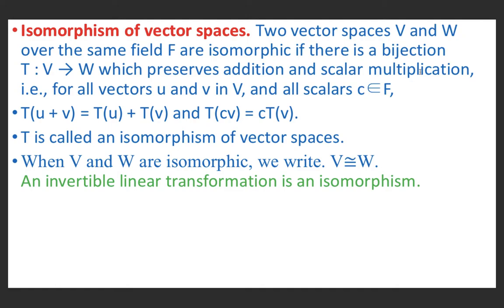Here bijection means T is one-one and onto. T preserves addition means T(u + v) = T(u) + T(v). T preserves scalar multiplication means T(cv) = cT(v), where u and v are elements in V and c is an element of field F. It is a scalar, and T is called the isomorphism of vector spaces V and W.